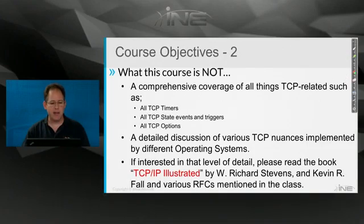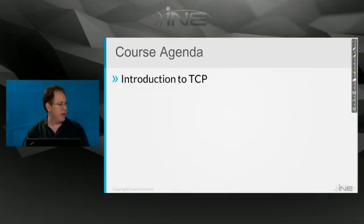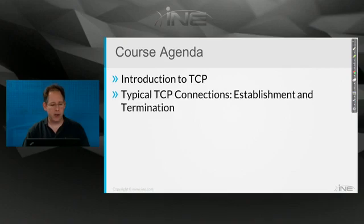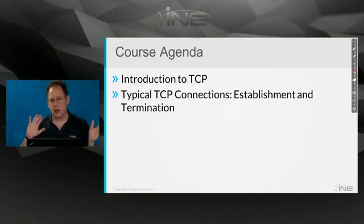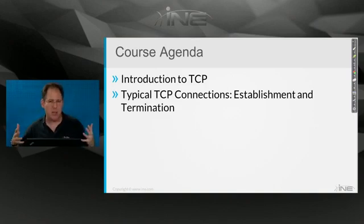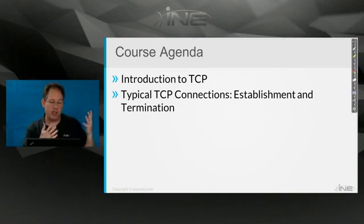So what am I going to be covering? I'm going to start with an introduction to TCP — a brief history of how it came about and the initial RFCs. Then we're going to go into typical connection establishment: barring any unforeseen weirdness or gotchas, what does a typical generic connection look like as it's built — or as they say, established — and as it's torn down?